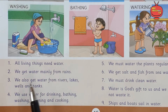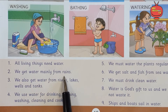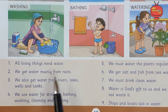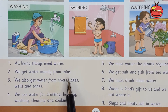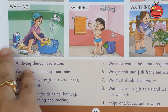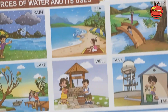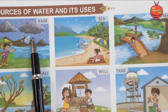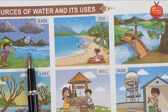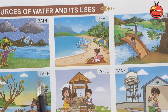We get water mainly from rains. We also get water from rivers, lakes, wells, and tanks. Apart from rains, we also get water from sea, river, lakes, wells, and tanks.